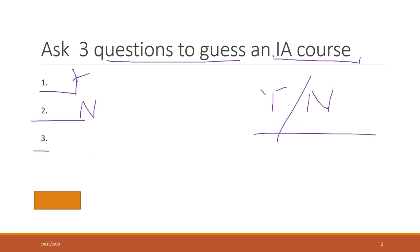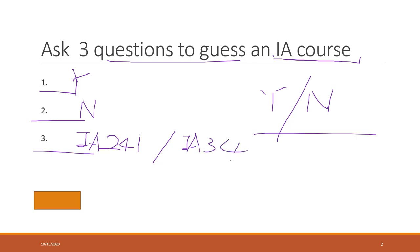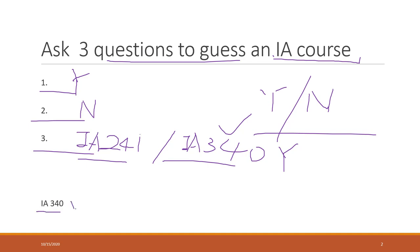That further narrows things down — the course is not offered in the first semester, so it is offered in the spring semester. Now narrowing to courses taught by me in spring semesters, there are only two options: I 541, which is Python, and I 340, which is Data Mining. So the third question is: is it I 340? And I say yes.